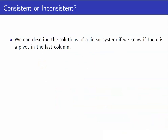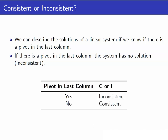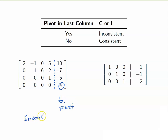Based on these examples, we want to know whether a system is consistent or inconsistent. The key is to look at whether there is a pivot in the last column of the augmented matrix. If there is a pivot in the last column, the system has no solution. Looking at the previous example with no solution, the entry 4 in the last row of the last column is a leading term — a pivot — so the system is inconsistent.